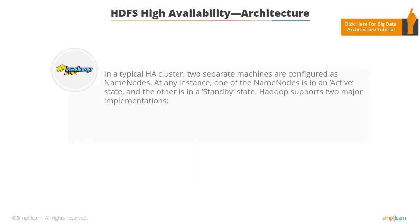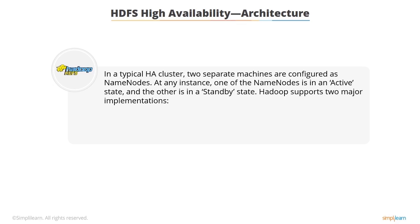In an HA cluster, two separate systems are configured as name nodes. At any instance, one of the name nodes is in an active state and the other is in a standby state. The active name node is responsible for all client operations in the cluster, while the standby simply acts as a slave, maintaining enough state to provide fast failover if necessary.